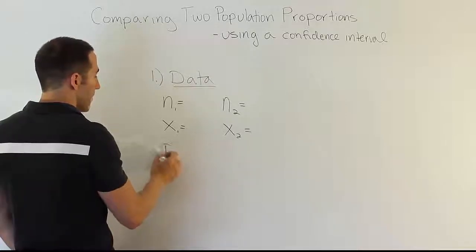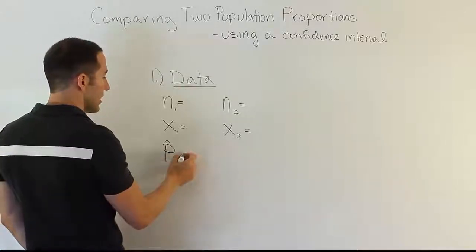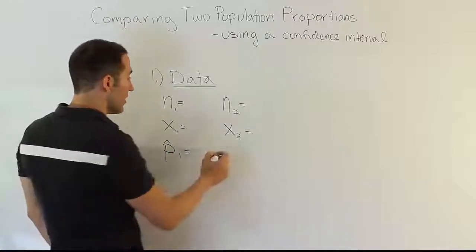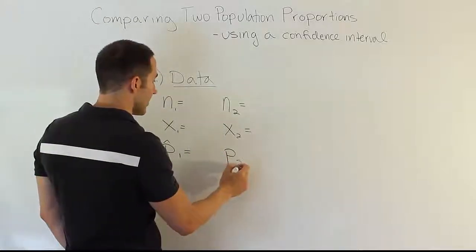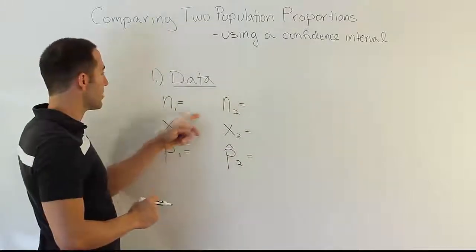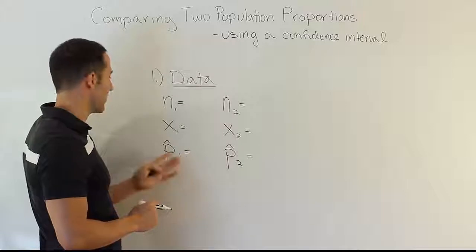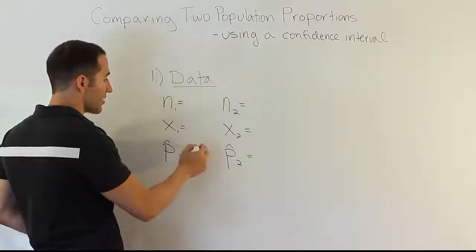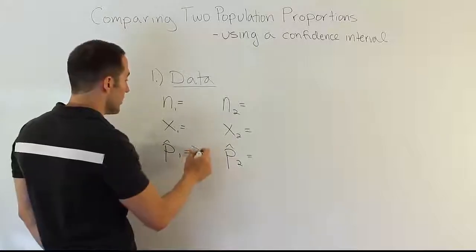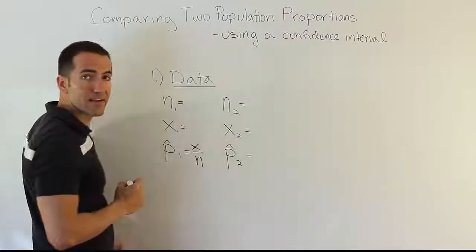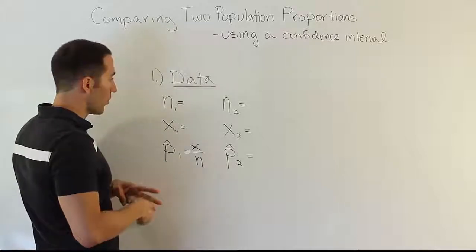I do want to say that p hat is sometimes given in place of x, because if you have p hat and n, you have all you need. So, you might get the p hat instead of the x value. Or, they might tell you 500 people out of 1,000 had this trait, and then you know your p hat is 50%. So, remember, your p hat is defined as x over n, the same as it's always been. You just divide those two quantities in order to get p hat. That's generally what's given in the problem.